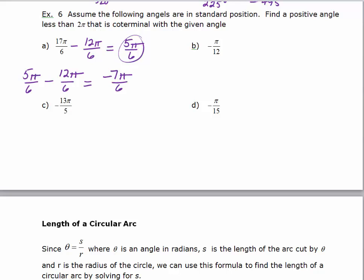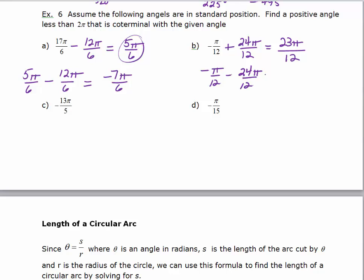For negative π/12, I know it's less than 2π, so to get a positive coterminal I add 2π. Here, 2π equals 24π/12, so negative π/12 plus 24π/12 gives 23π/12 as the positive coterminal. For a negative coterminal, take negative π/12 and subtract 24π/12, giving negative 25π/12.